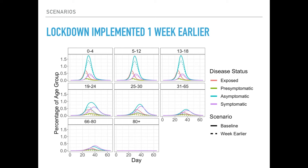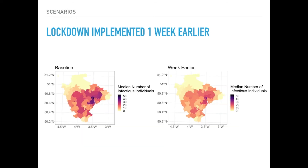Because we have information on individuals and what happens to them, we can look at the effect of that scenario on individual age groups. We can also track at any point in time how many people are in each state of the SEIR model — exposed, pre-symptomatic, asymptomatic, symptomatic — to see whether there were differential changes among members of the population under different scenarios, and also whether there are any spatial patterns in the differences between the two scenarios.